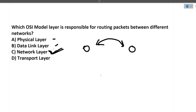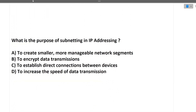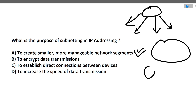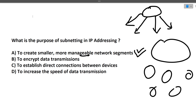Next question: what is the purpose of subnetting in IP addresses? Subnetting means we take one parent IP address and divide it into several child IP addresses. We do this to create smaller, more manageable network segments. In a big IP address range we create subnets so that our network is smaller and manageable.